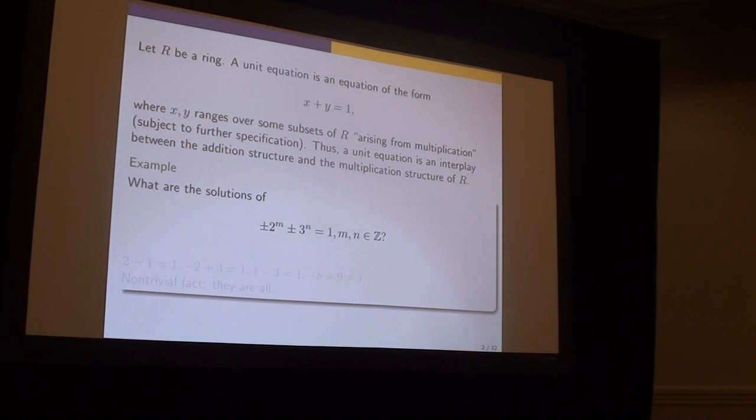This is a very typical example of a unit equation. What are the solutions of 2^x plus 3^y equals 1? You want the power of 2 and power of 3 to differ by 1. If you think a little bit, you will find this form. But as a non-trivial fact, it turns out they are all, and it's asserted by some theorems. Although this is a very important example, the thing about the intuition of this is a very good example you should keep in mind throughout this talk.